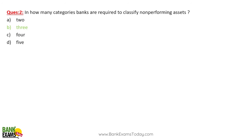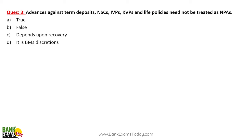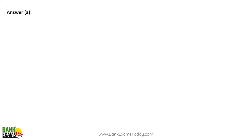So those are the three NPA categories: substandard, doubtful, and loss. Advances against term deposits, FDs, NSC, IVP, Kisan Vikas Patra, and life policies — any loan taken against these investments cannot become an NPA, because at any time you can sell these securities and recover your dues.